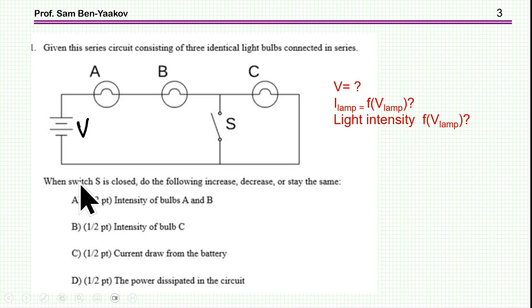When the switch S is closed, do the following increase, decrease or stay the same? First of all, the intensity of bulb A and B. So when you close the switch, is the intensity going up or down or stays the same?